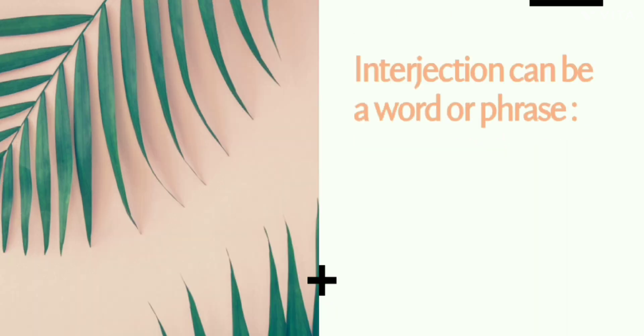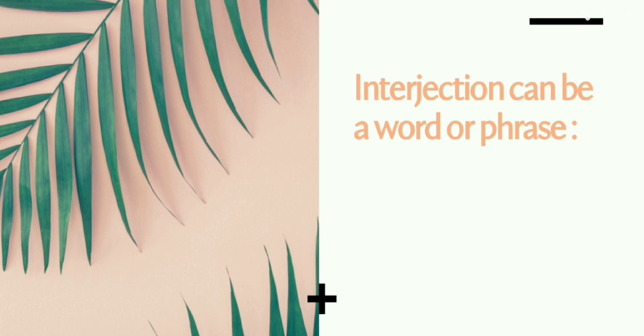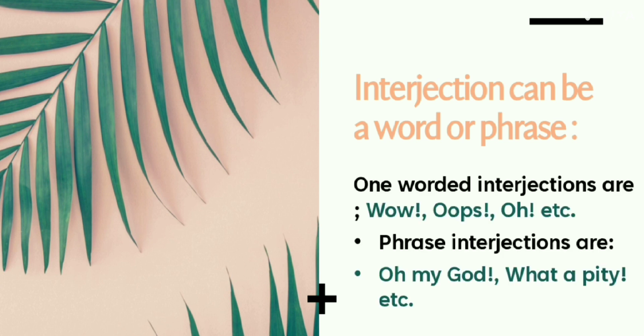Interjections can be a word or phrase. One-worded interjections are words like wow, oops, oh, etc. Phrase interjections are words like oh my god, what a pity, etc.